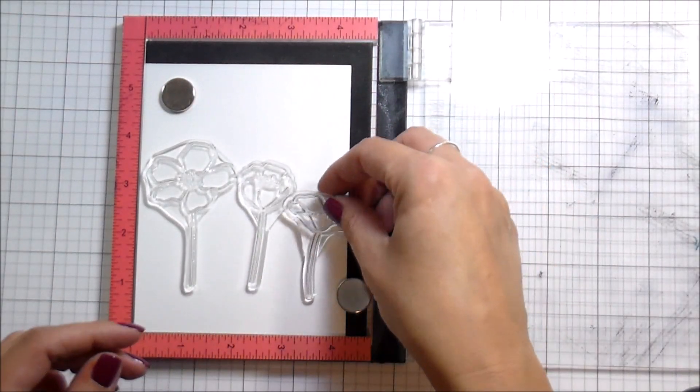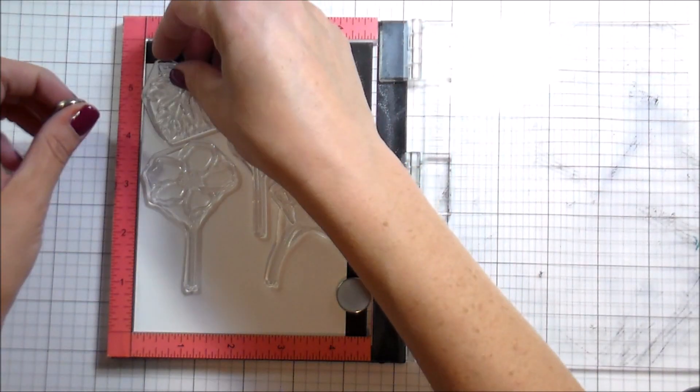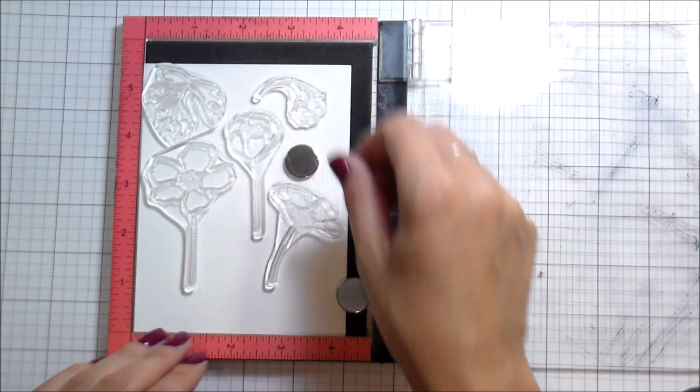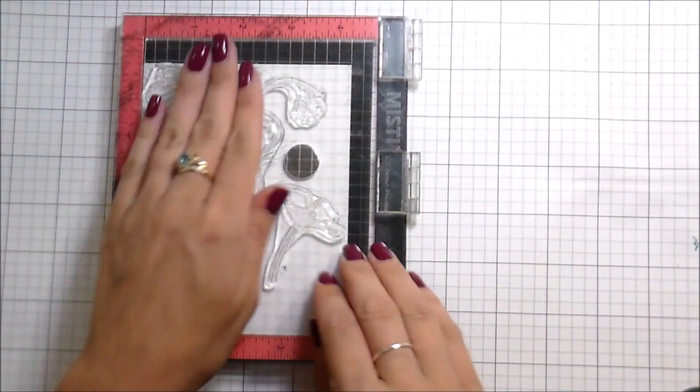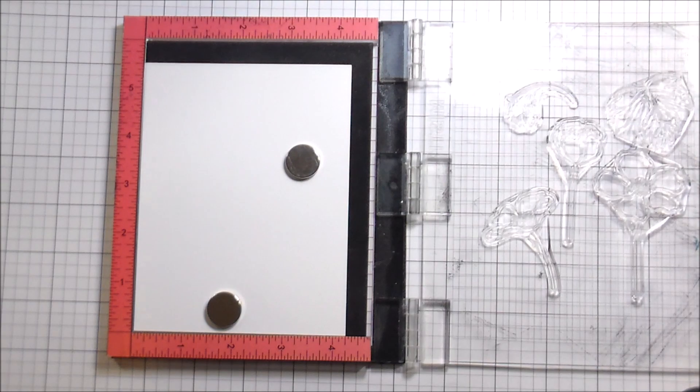The next step is stamping out these flowers. I'm going to extend the stems of these flowers so I can make them as tall as I need them to be. That's why you see me leaving all the white area at the bottom and stamping the leaves at the top.